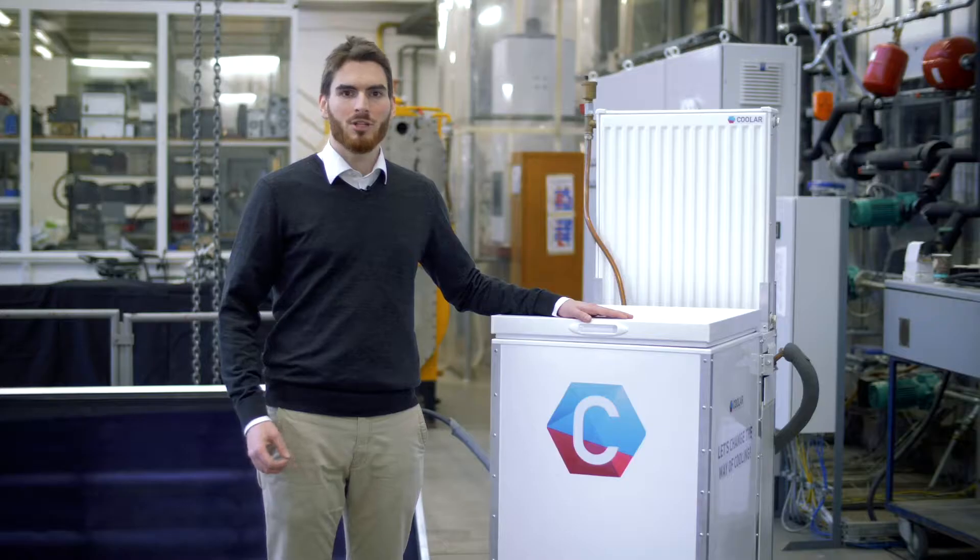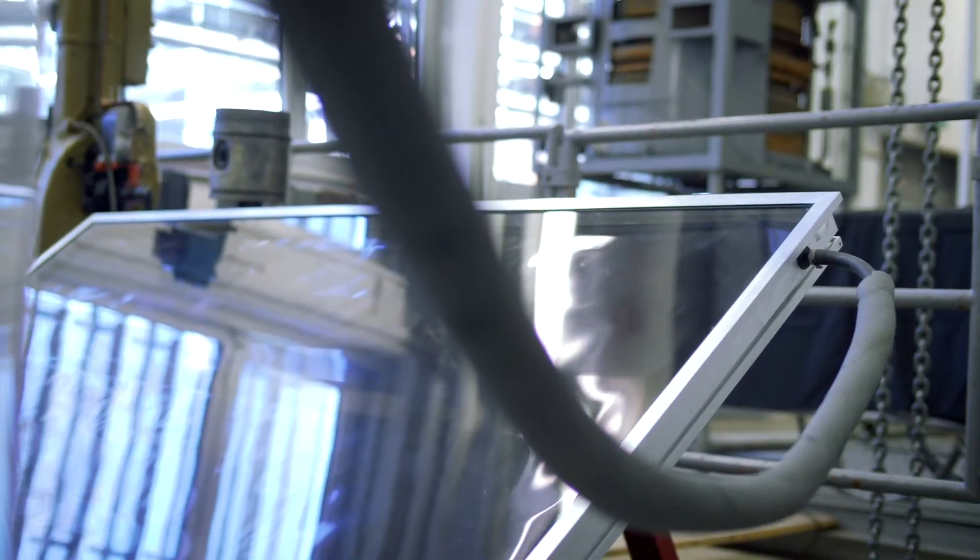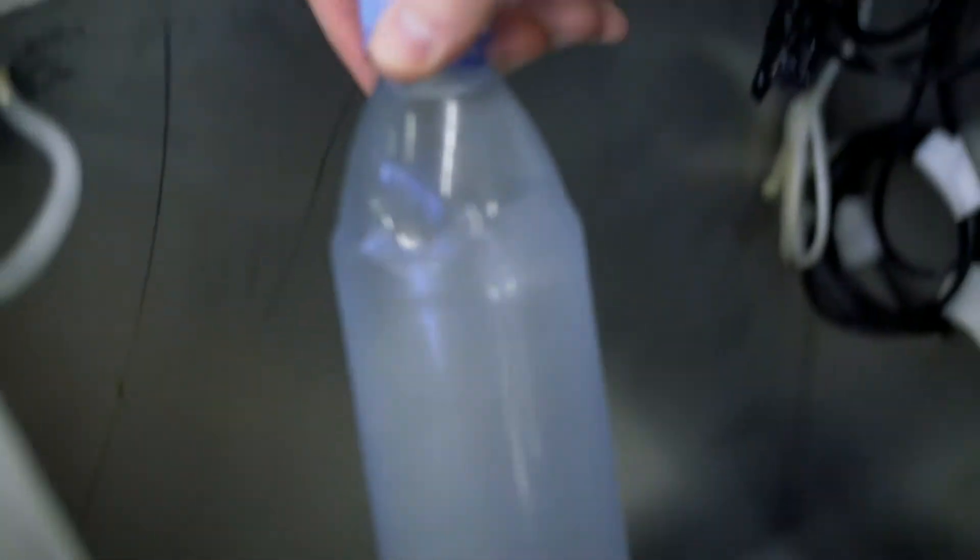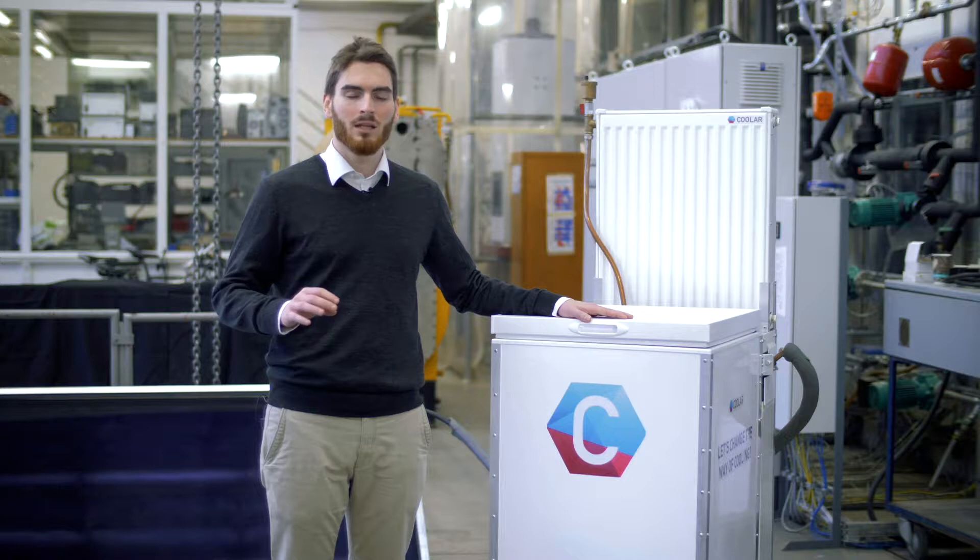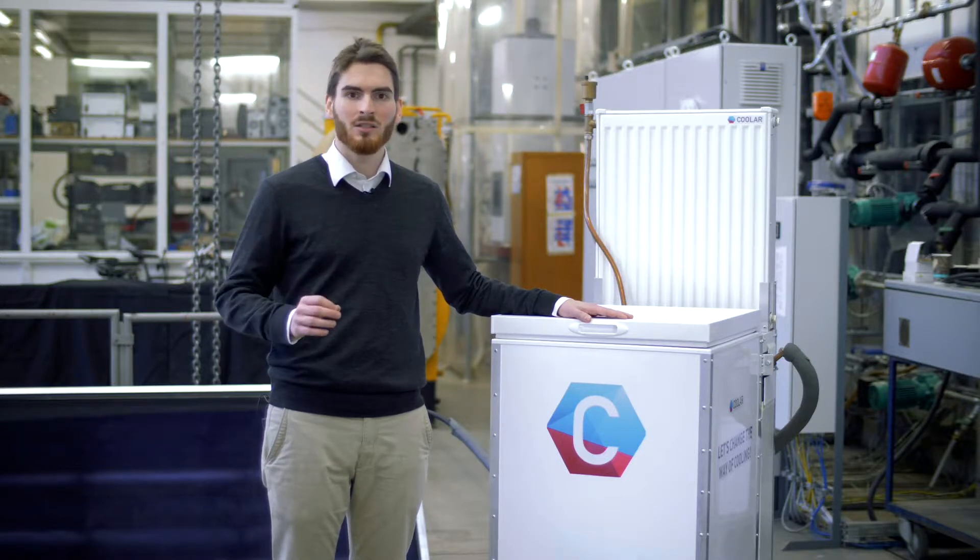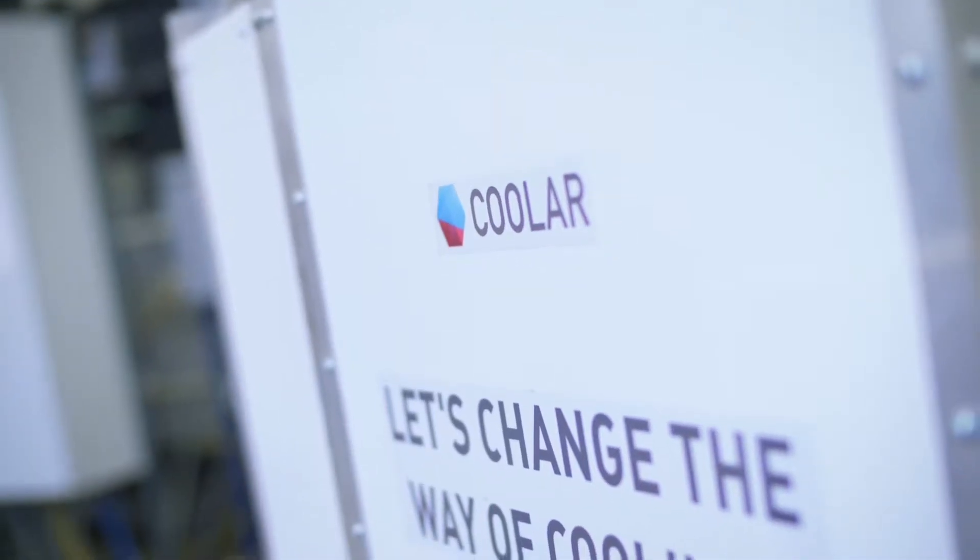This Kular fridge runs completely without electricity. Instead, it uses solar heat to run a sorption cooling cycle, and this way it can reliably cool even under off-grid conditions, without any breakable electronics or rotating parts. And it's completely non-hazardous because it uses water as a refrigerant, and therefore is extremely sustainable.